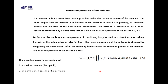An antenna picks up noise from radiating bodies within its radiation pattern. The noise output is a function of the direction in which it is pointing, its radiation pattern, and the surrounding environment. The antenna is characterized by a noise temperature T_AK. If T_B(θ,φ) is the brightness temperature of a radiating body in direction (θ,φ) where the antenna gain is G(θ,φ), the antenna noise temperature is obtained by integrating over all radiating bodies within the radiation pattern. Two cases are considered: a satellite antenna for the uplink, and the earth station antenna for the downlink.